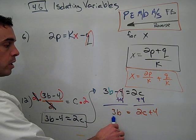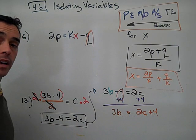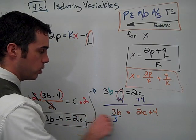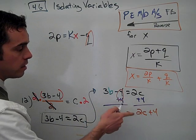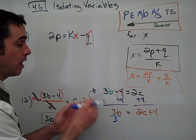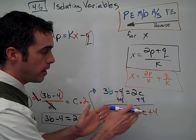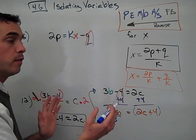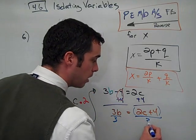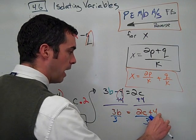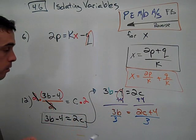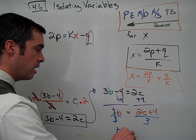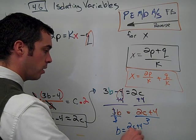And now I have 3 times b equals that stuff. Well, if I want to isolate b, I have to do the inverse of times 3, which is divided by 3. And I'll divide the right side by 3 as well. The entire right side needs to be divided by 3. Think about that in a group if it helps you. Divide the entire group by 3. 3 divided by 3 is 1, and 1b is the same thing as b equals 2c plus 4 divided by 3.